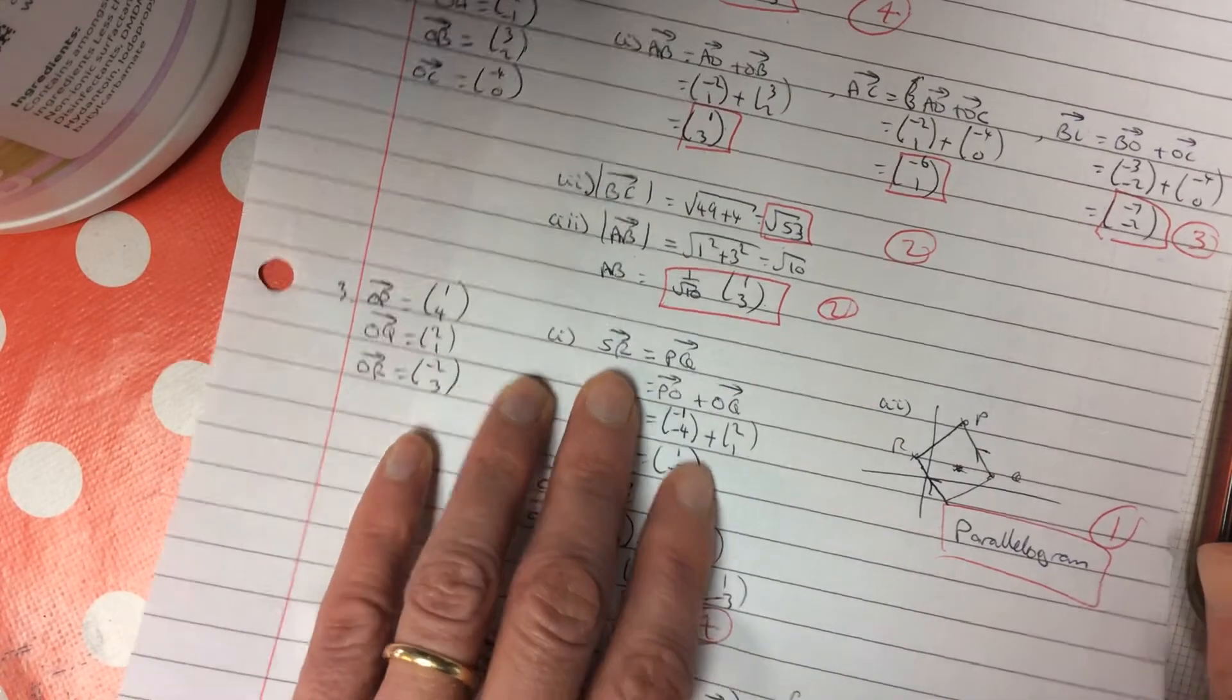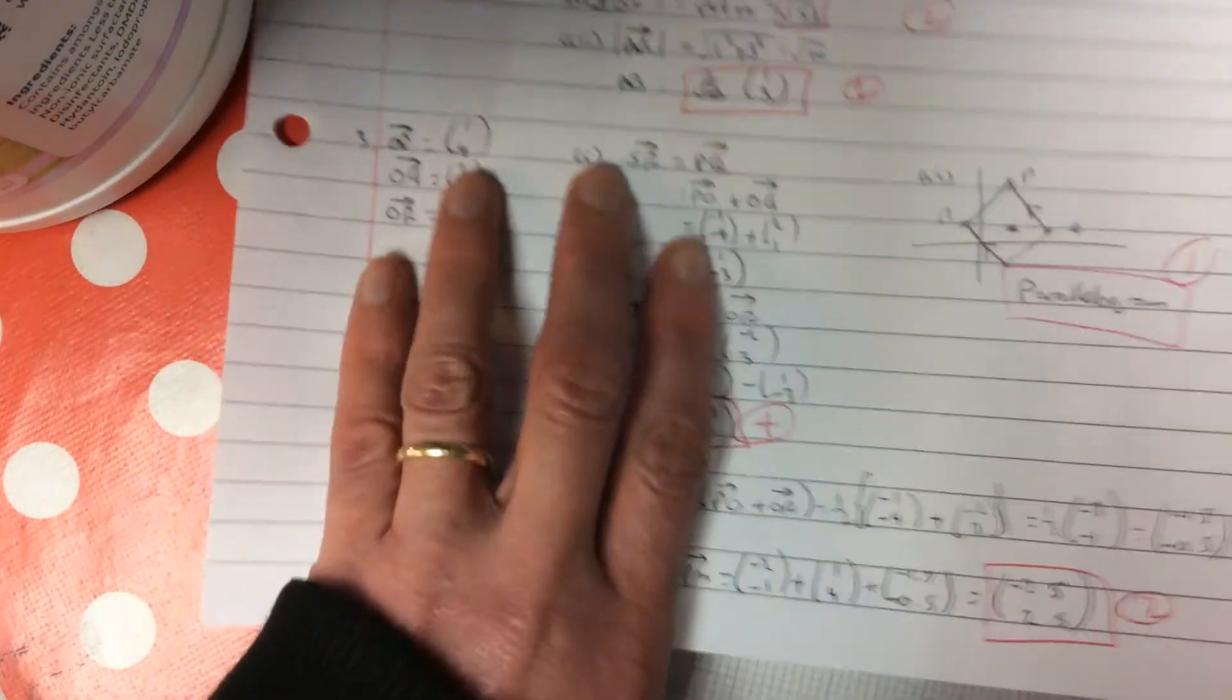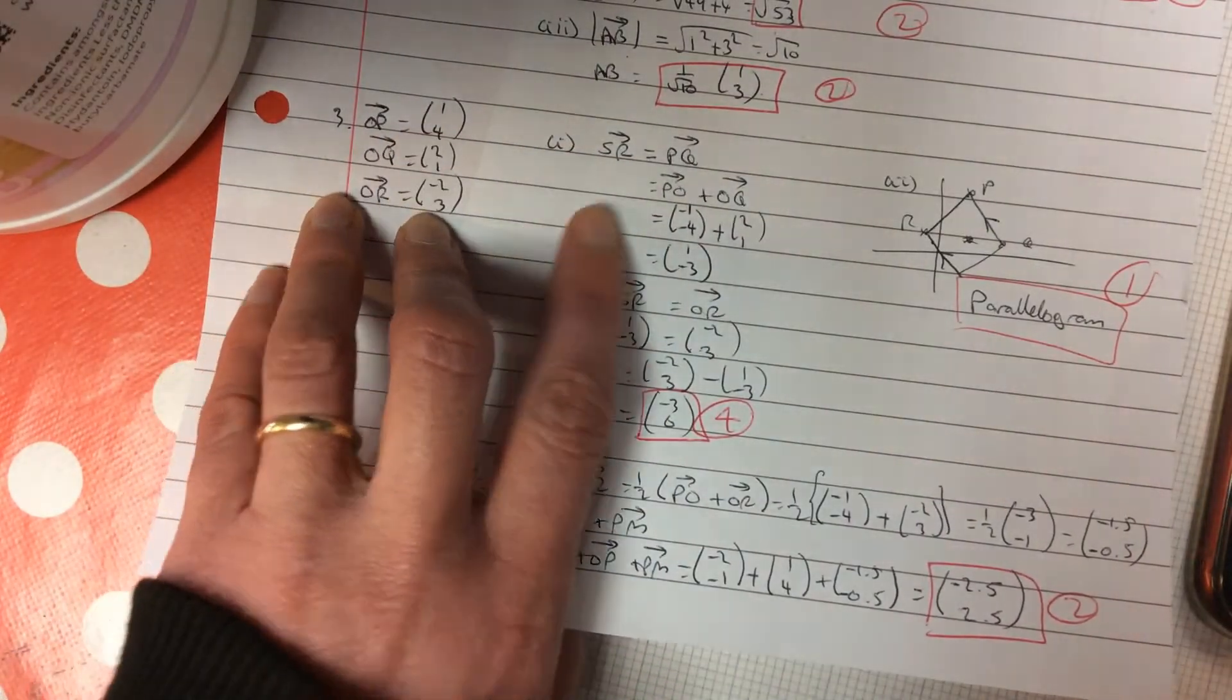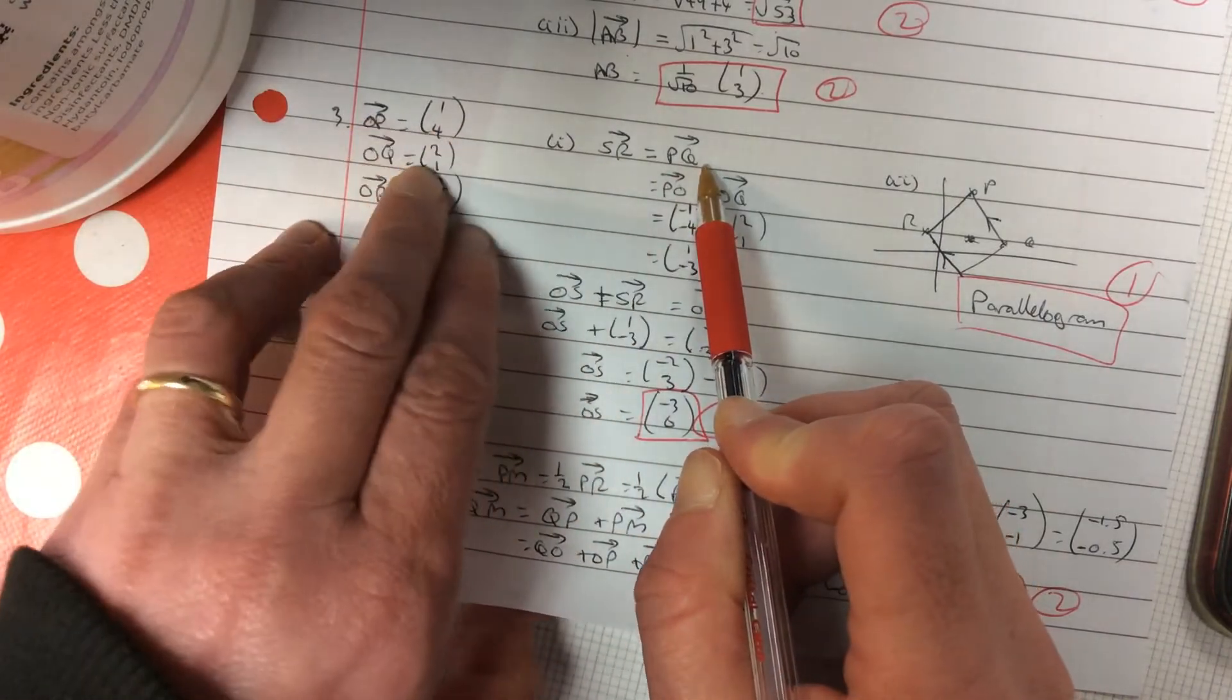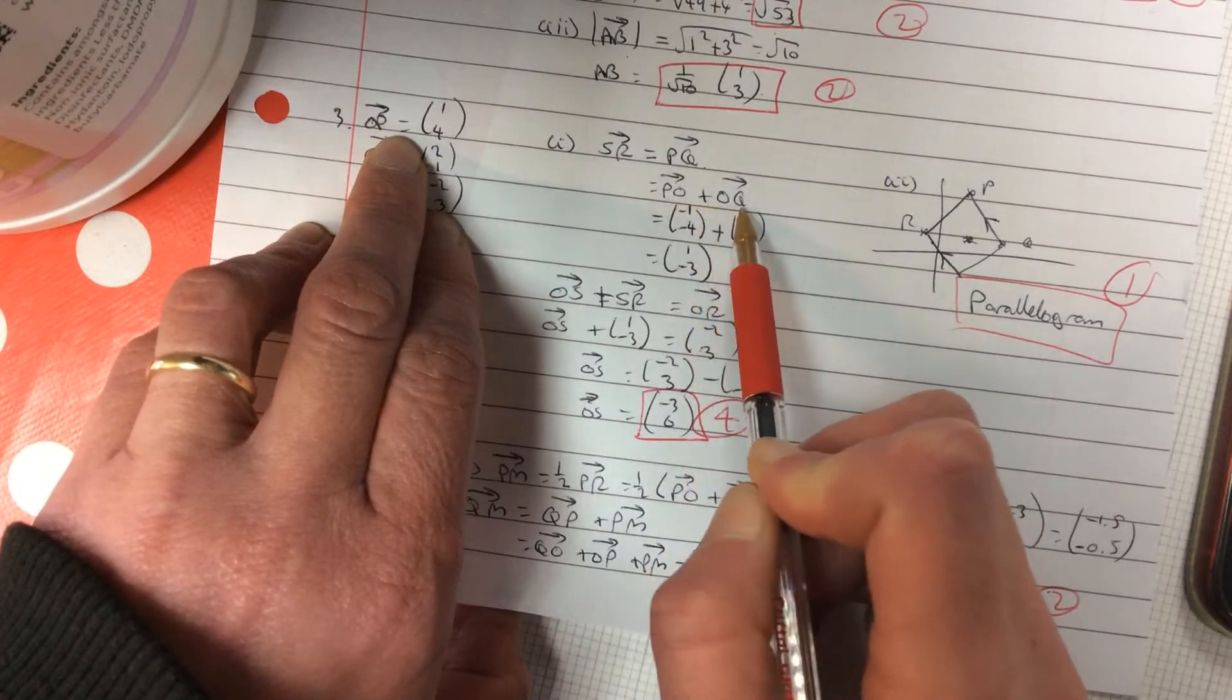Number 3. Let me see. Write them as position vectors. First of all, and then you are told SR equals PQ. Right, you've got plenty of points over here that you can work with this. PQ is PO plus OQ.